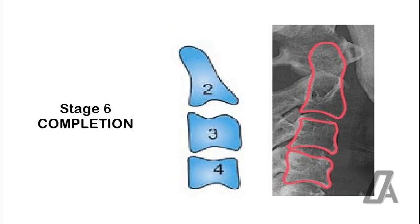Stage 6, Completion. In this stage, adolescent growth is almost complete. More accentuated concavities are seen in inferior borders of C2, C3, and C4. Shape of C3 and C4 is square with vertical height.